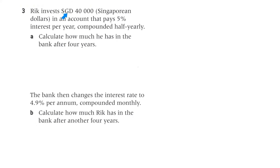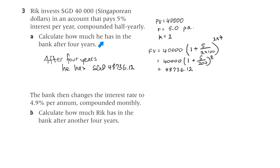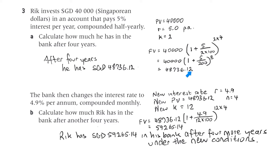Question 3. Rick invests Singaporean dollars 40,000 in an account that pays 5% interest per year, compounded half yearly, so K is 2. Part A: calculate how much he has in the bank after 4 years. The present value is $40,000, R is 5, K is 2 because it's half yearly. We put everything in and get $48,736.12.